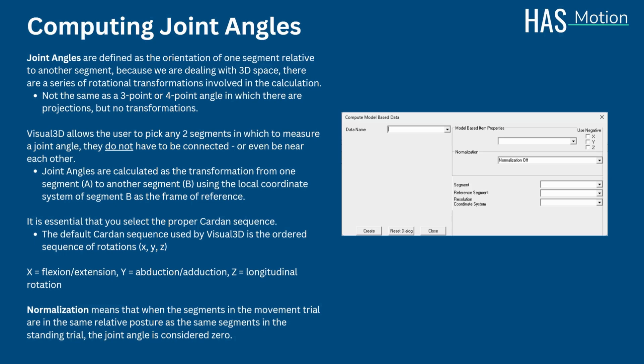One of the options for joint angles is to select normalization. This is not generally recommended, however. Normalization means that when the segments in the movement trial are in the same relative posture as the same segments in the standing trial, the joint angle is considered zero. The problem with the calculation of a normalized angle is that the standing posture and the movement trial should both be aligned with the laboratory axis. Getting a patient to stand oriented relative to the lab may not be possible in some situations. An alternative approach is to create virtual segments which define the desired angles in the standing posture.